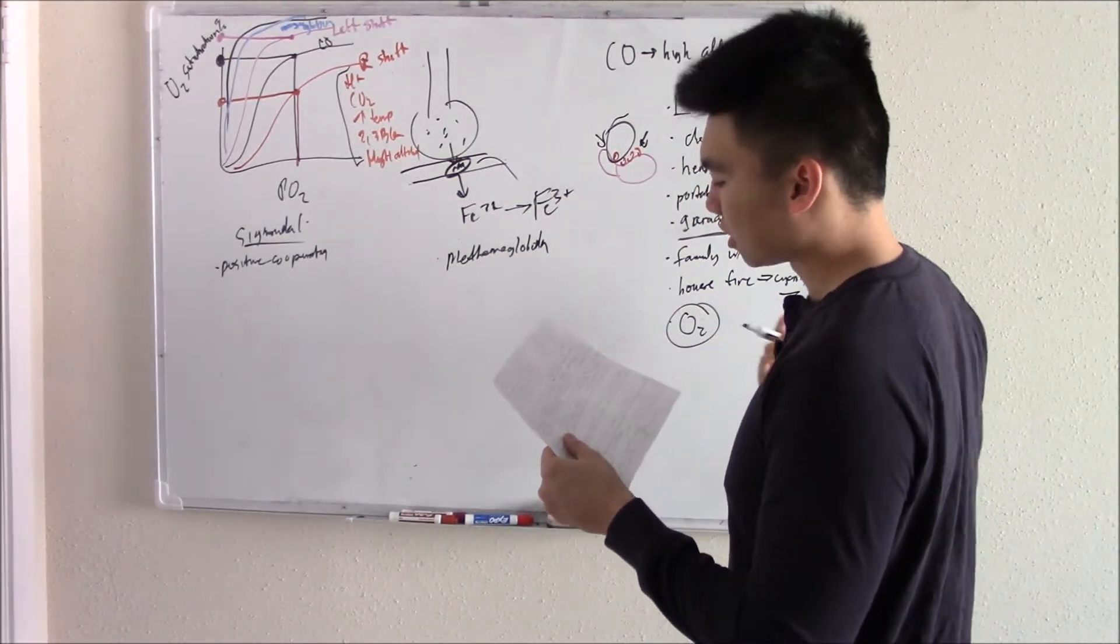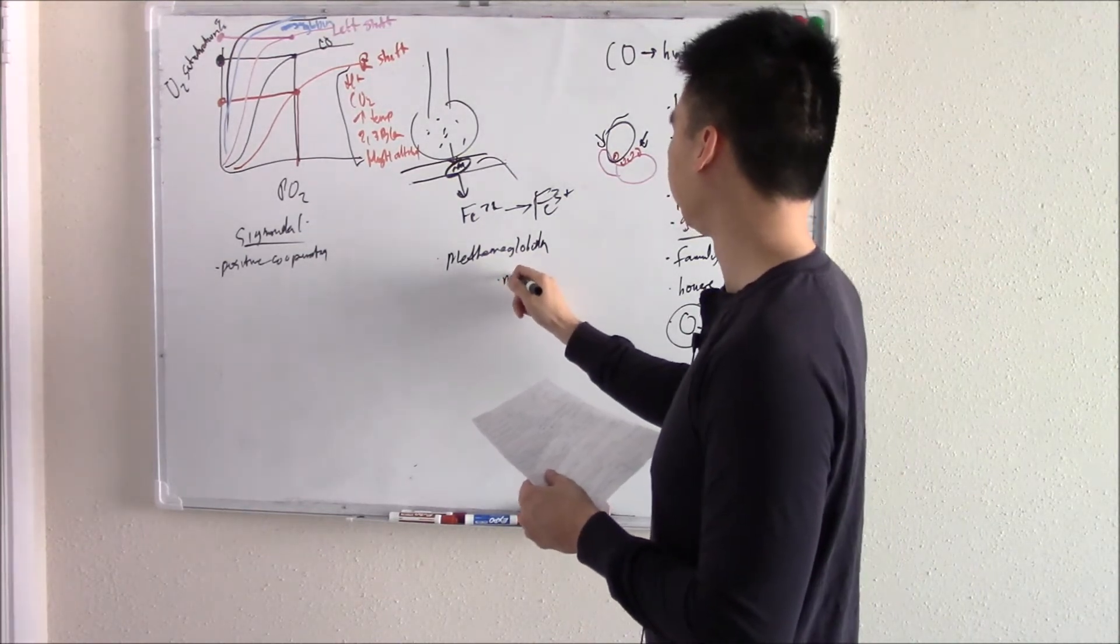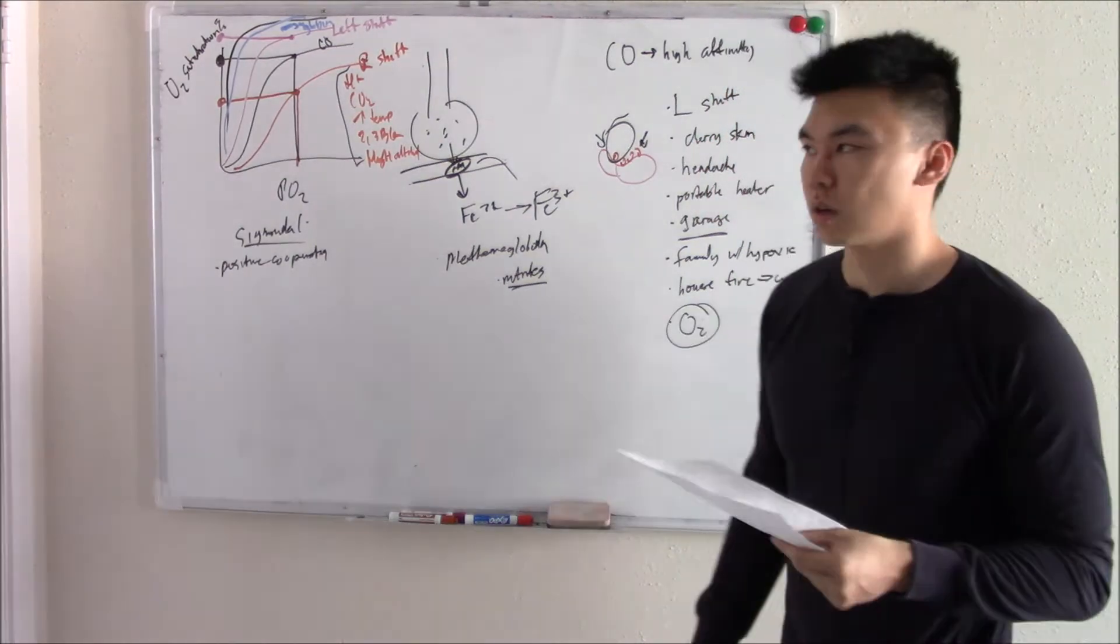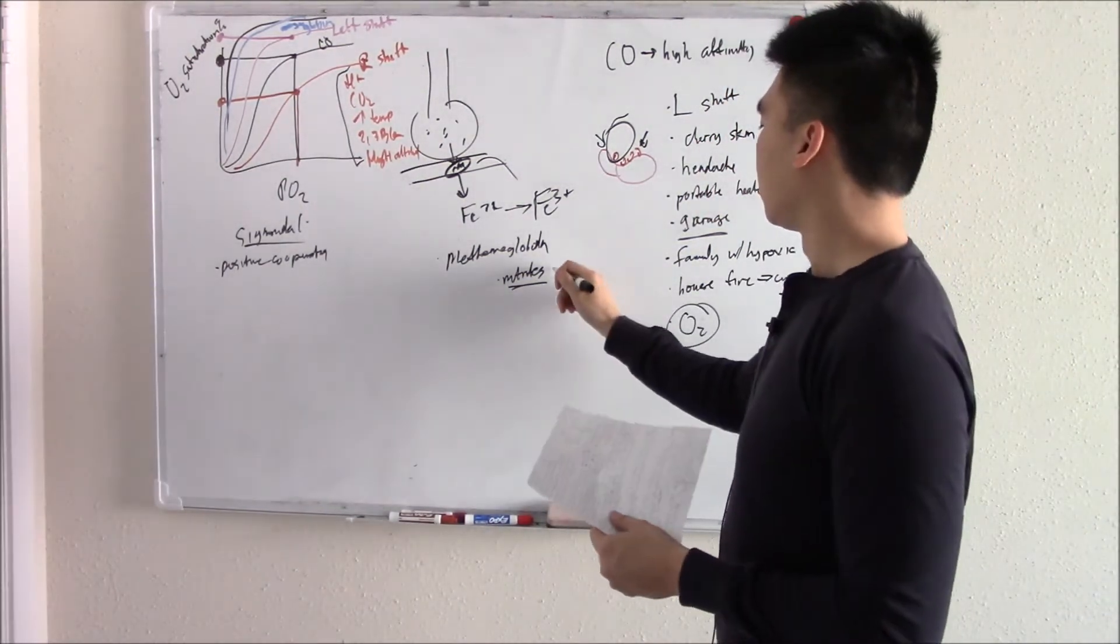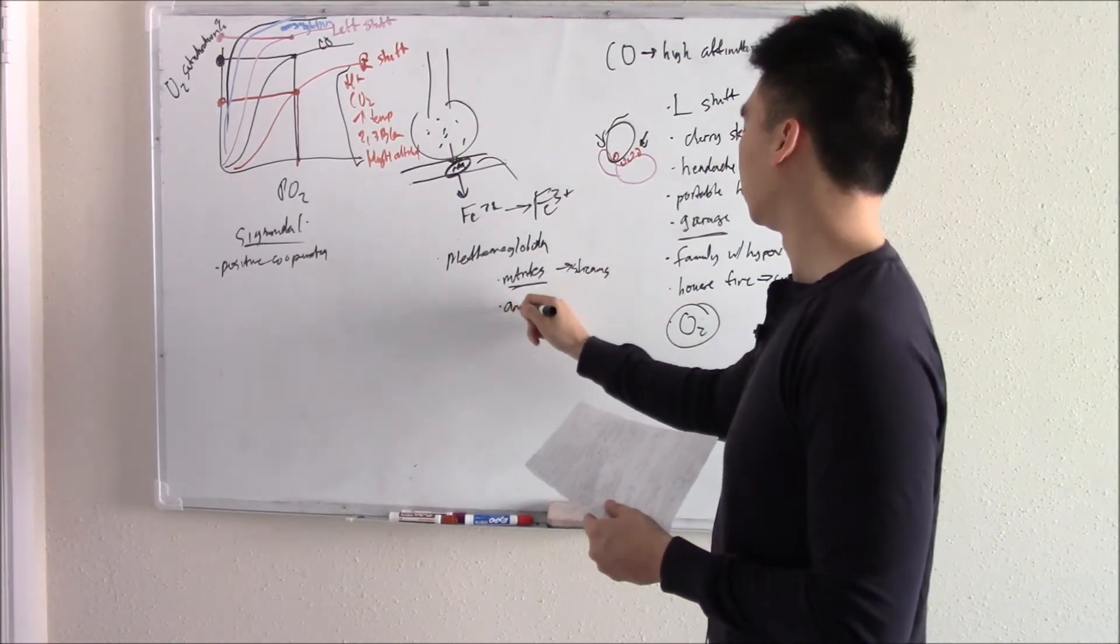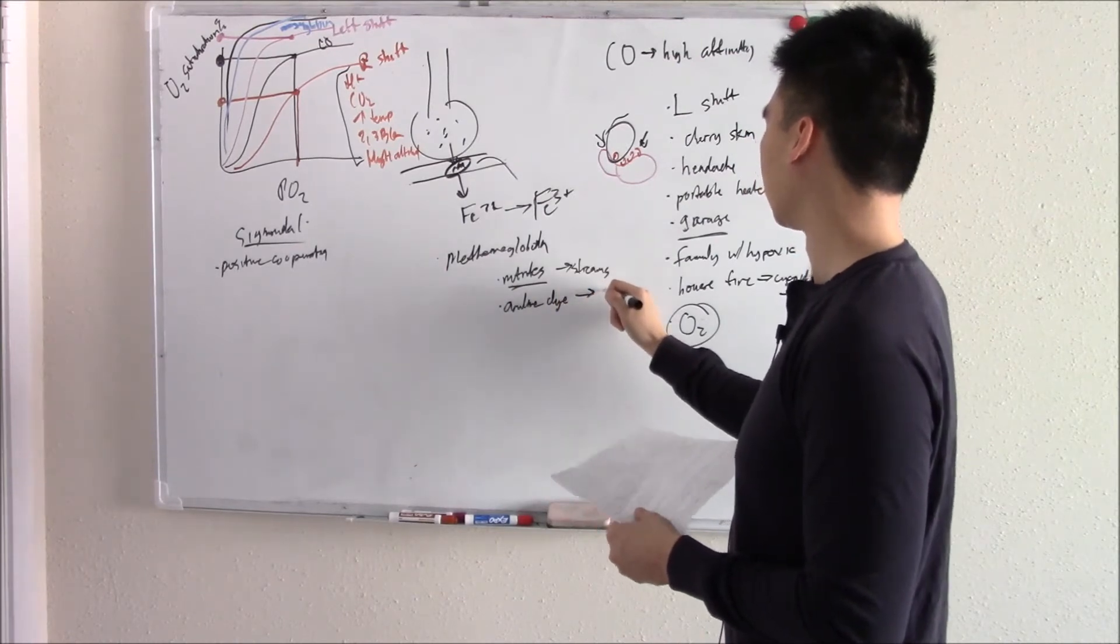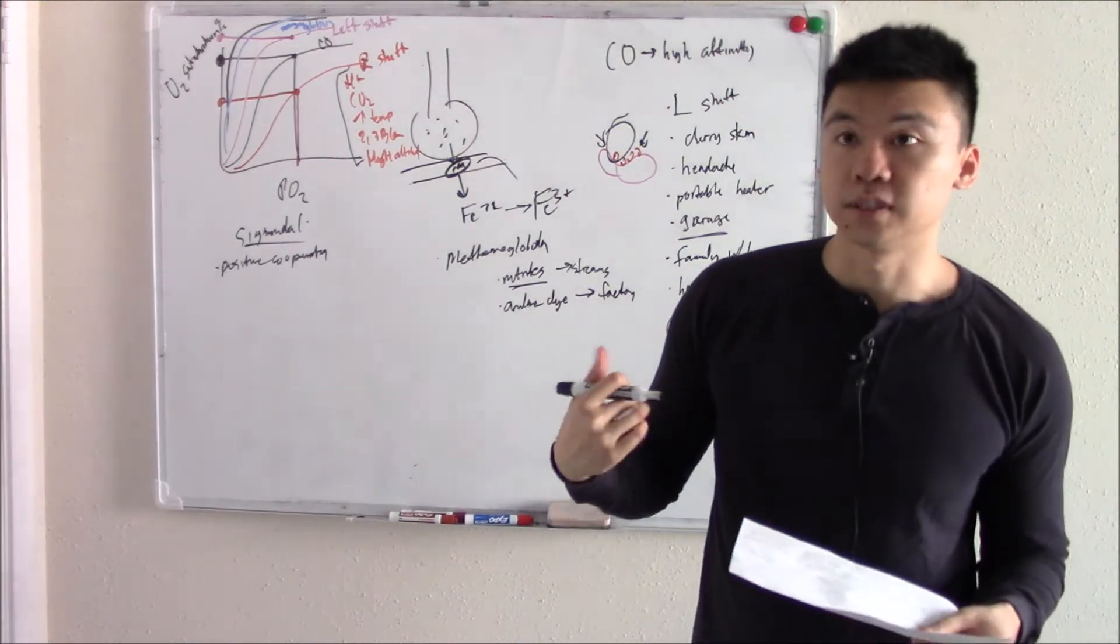What are some things that can oxidize this? Well, you have to give oxidizing agents like nitrites. That's commonly found in streams. So if someone goes hiking, drinks water from the stream, then develops hypoxia. Streams. Aniline dye. So someone working in a dye factory.